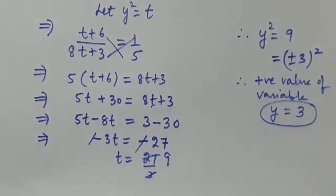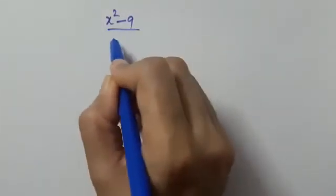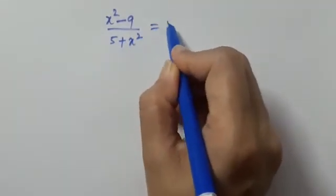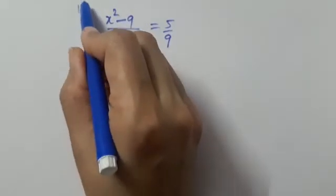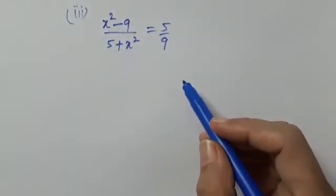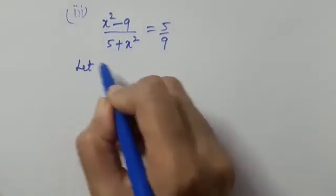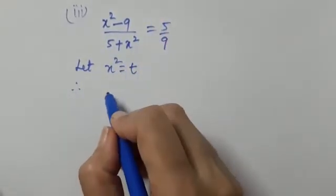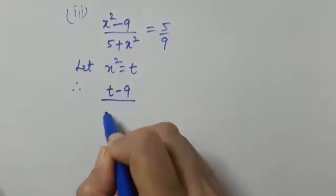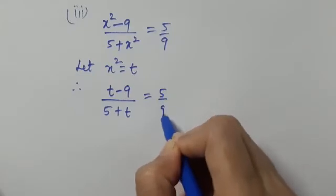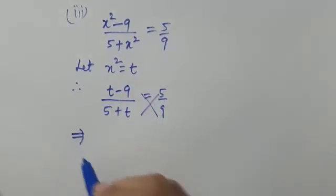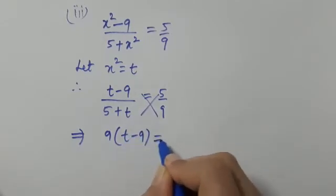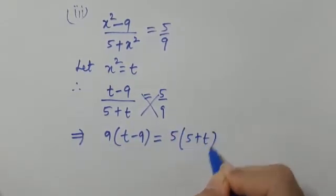Let us now quickly do the third part. The equation is (x² − 9) / (5 + x²) = 5/9 and we need to find the positive value of x. We write x² = t, so the equation becomes (t − 9) / (5 + t) = 5/9. Cross multiply: 9 × (t − 9) = 5 × (5 + t).